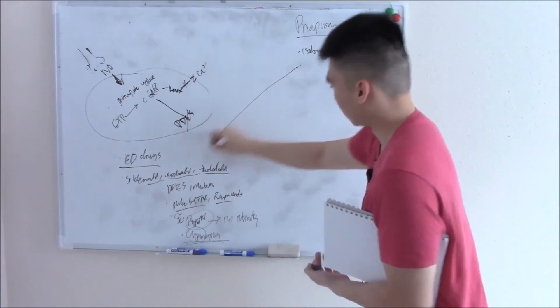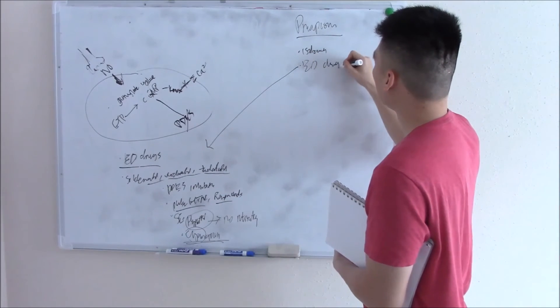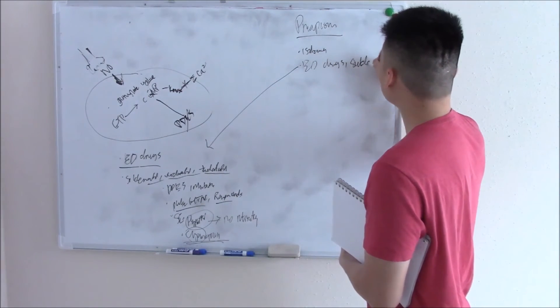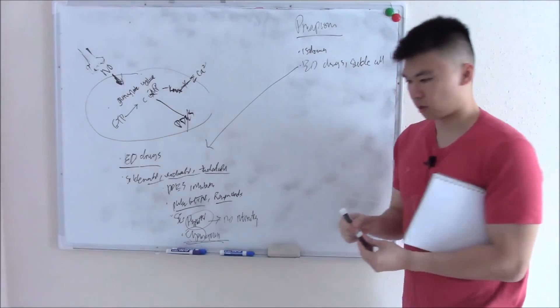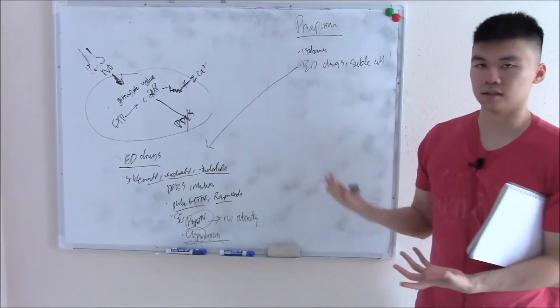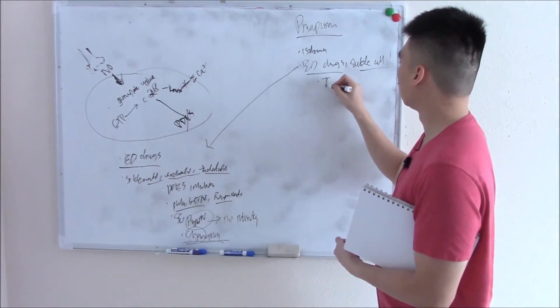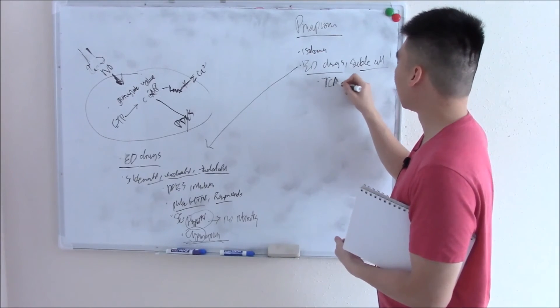Some things that are associated with it: ED drugs, obviously. Sickle cell, because cells can sickle and cause vaso-occlusive crises for your lungs, bones - so your penis is no different. And TCAs can cause this.